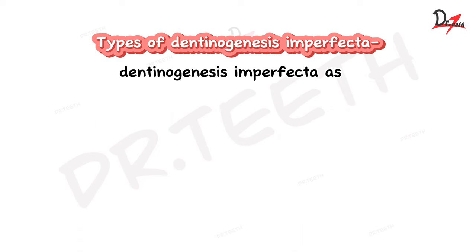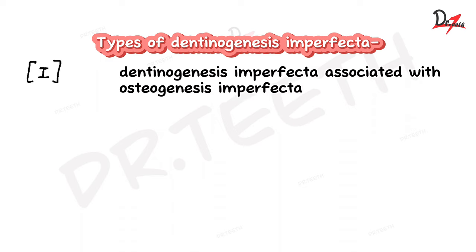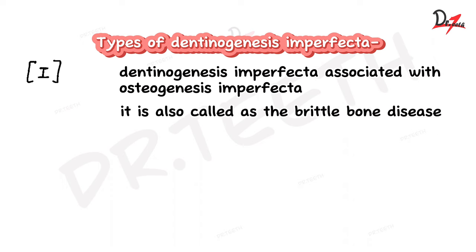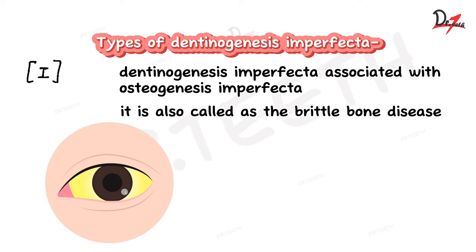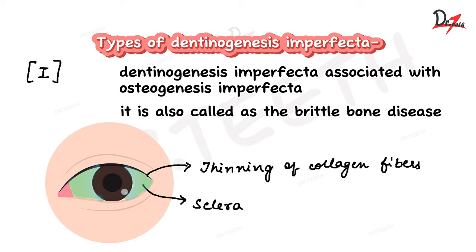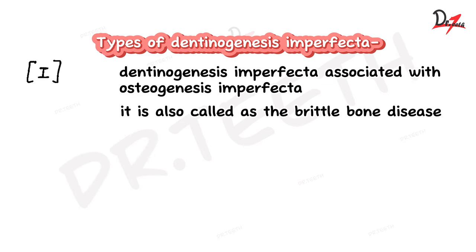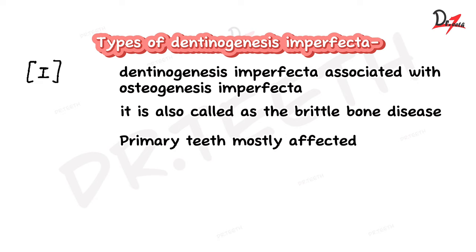Type one is Dentinogenesis imperfecta associated with Osteogenesis imperfecta, meaning the patient also has a defect in bone. In Osteogenesis imperfecta, the bones are very fragile and can break easily — it is also called brittle bone disease. Another feature is the sclera, the white part of the eye, which becomes bluish due to thinning of collagen fibers. In type one, the primary teeth are most commonly affected.